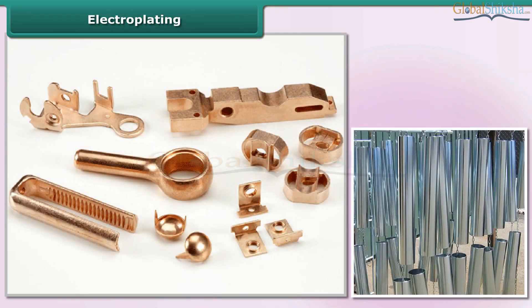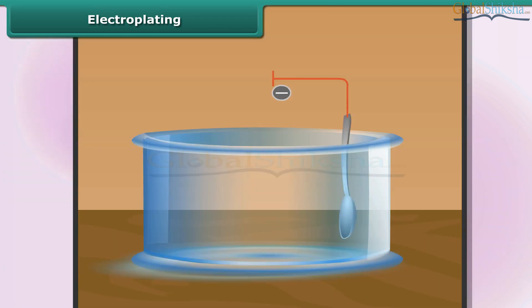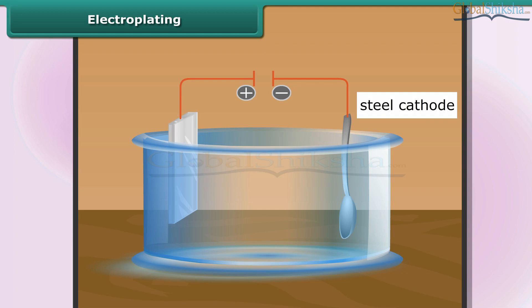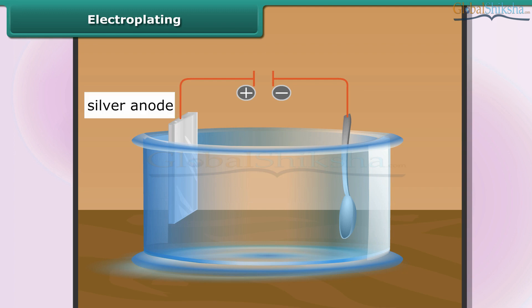Electroplating: It is common practice to coat articles made of cheap metals such as iron or steel with a thin layer of a less reactive metal. A steel object, for example a spoon, is connected to the negative terminal of the current source. The positive terminal is connected to the bar of the metal, for example pure silver. Thus the spoon acts as the cathode in the electrolysis, while the bar of metal acts as the anode.